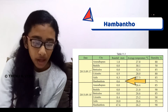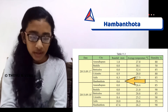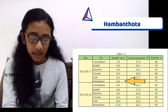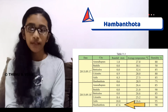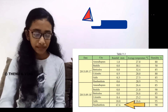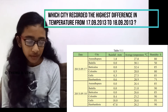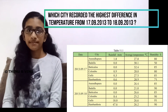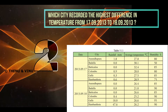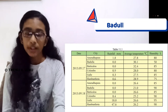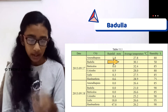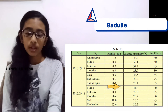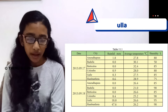Because in the rainfall column you can see that on the first day Hambantota has 0.6 mm, but on the next day it has 47.6 mm. The next question is: which city recorded the highest change in temperature from 17-9-2013 to 18-9-2013? The answer is Badulla, because Badulla has 30.1 degrees Celsius on the first day, but on the second day it has 21.0 degrees. So the difference is 9.1, which is the highest.